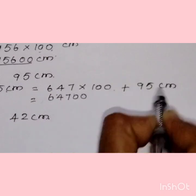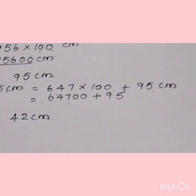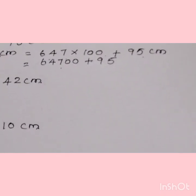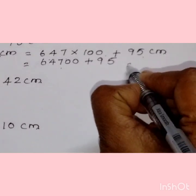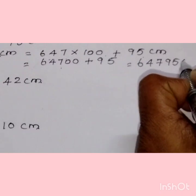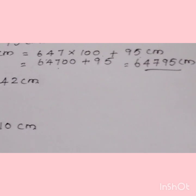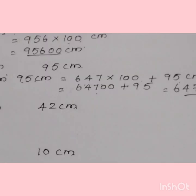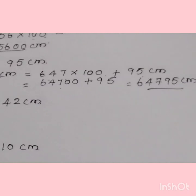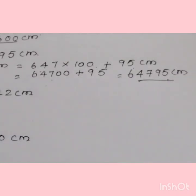For the question 647 meters 95 centimeters: we multiply 647 by 100 to get 64,700, then add the 95 centimeters that were already given. So the answer is 64,795 centimeters. In this question we had meters and centimeters together — we first converted the meters into centimeters and then added the remaining centimeters to it.